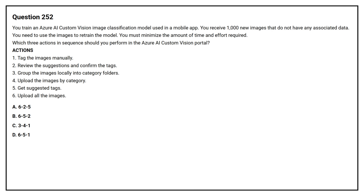The options are: 1. Tag the images manually. 2. Review the suggestions and confirm the tags. 3. Group the images locally into category folders. 4. Upload the images by category. 5. Get suggested tags. 6. Upload all the images.